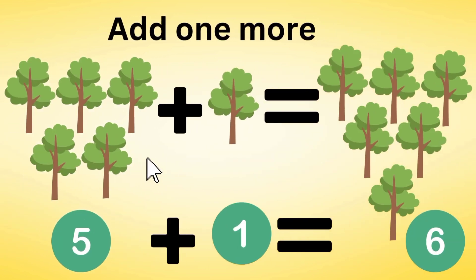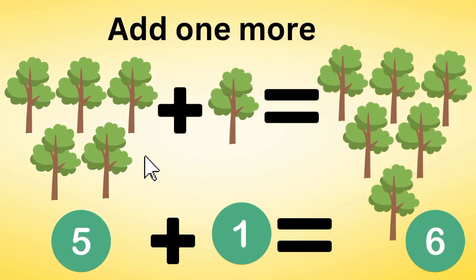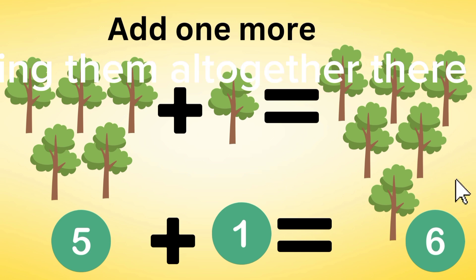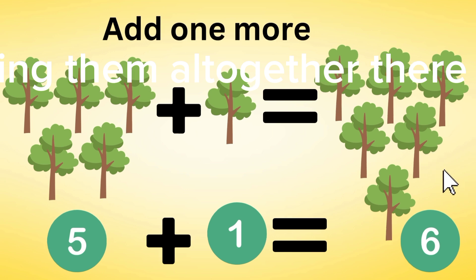Now let's count the trees. If there are five trees and we add one more tree, then we count them all together. And after counting them all together, there will be six trees.